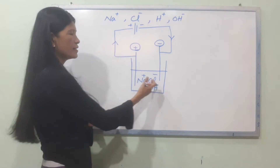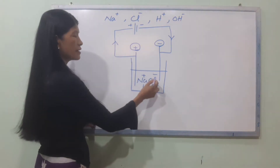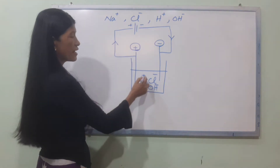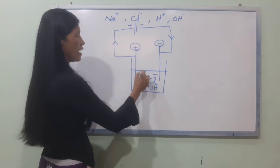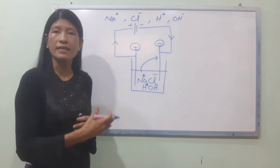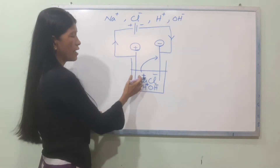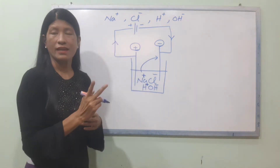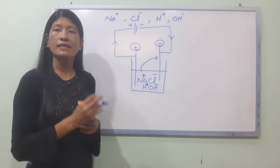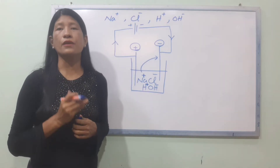On electrolysis, the solution contains Na+, Cl-, H+, and OH- ions. The positive ions — H+ ions — move to the cathode. The cathode attracts positive ions.